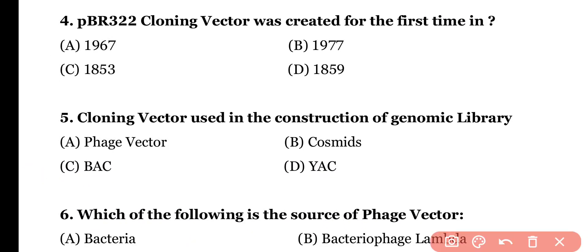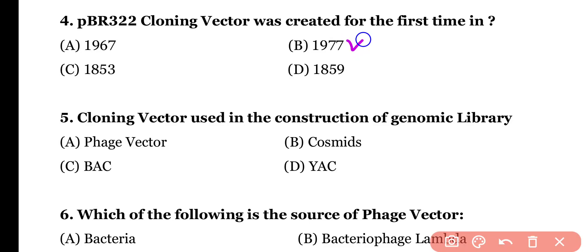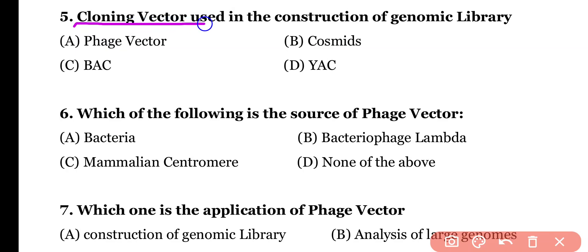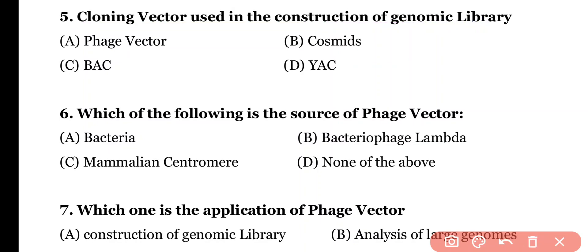Question 4 and Question 5. The cloning vector used in the construction of a genomic library is: phage vector, cosmid, bacterial artificial chromosome, or yeast artificial chromosome. Correct answer is option A.